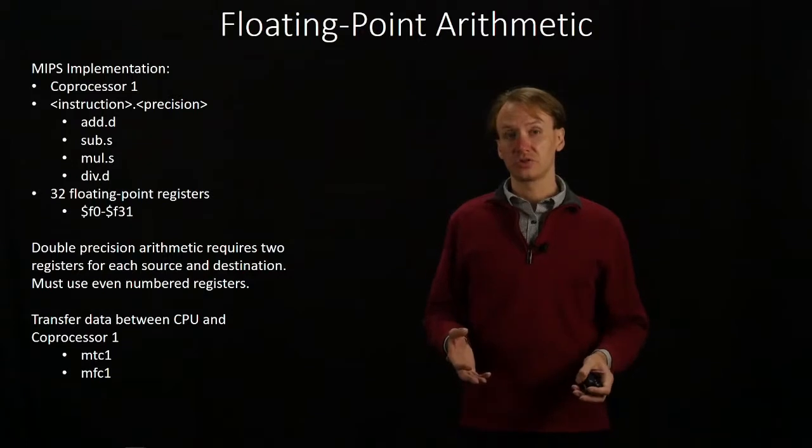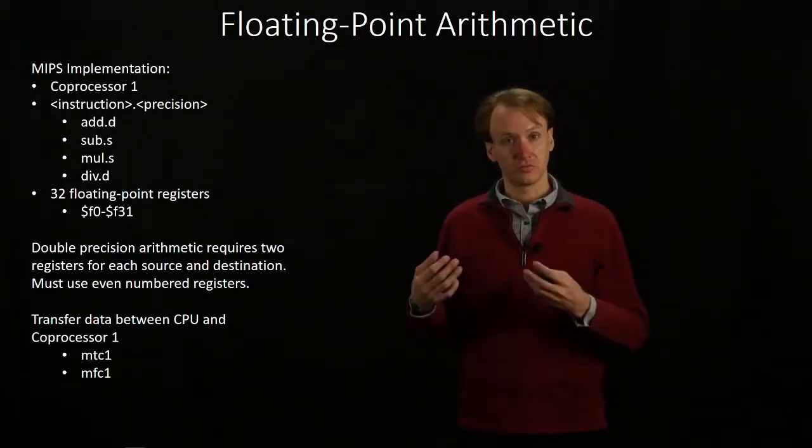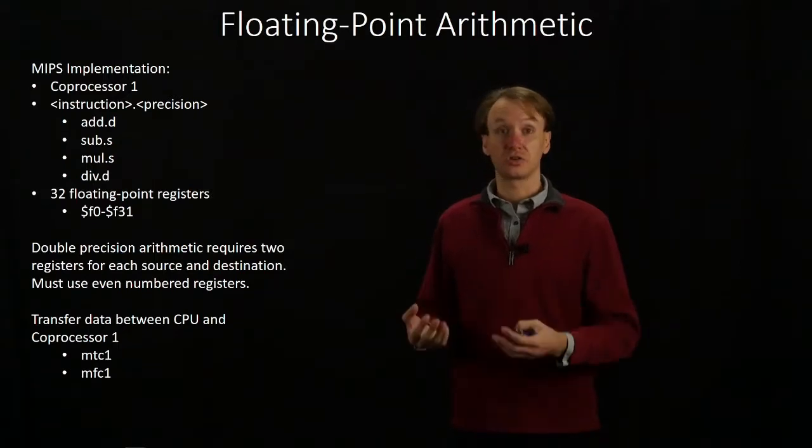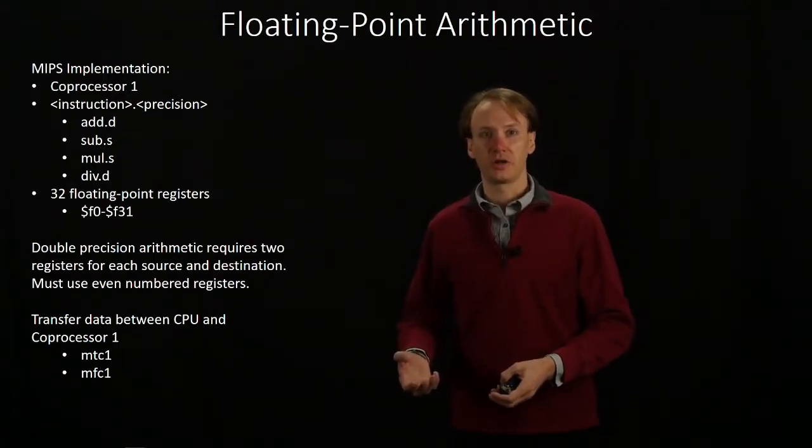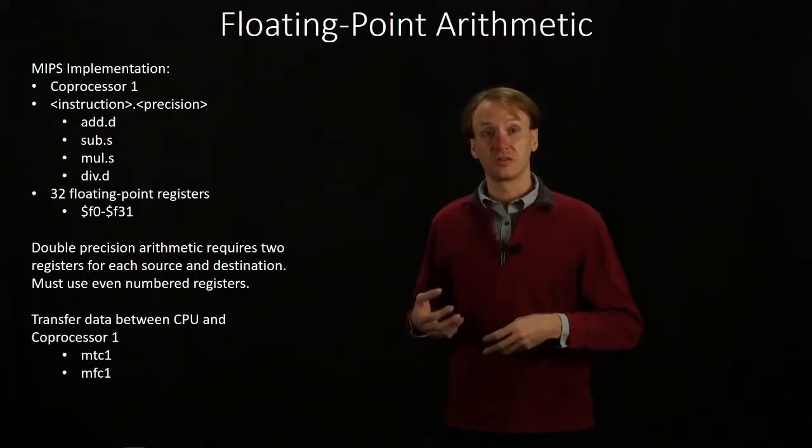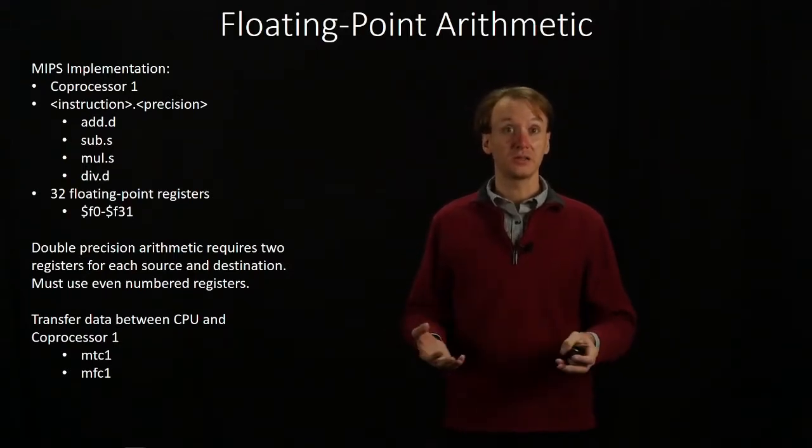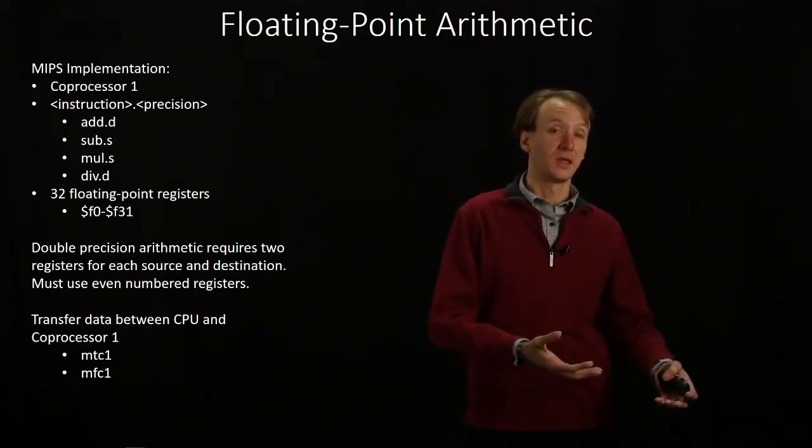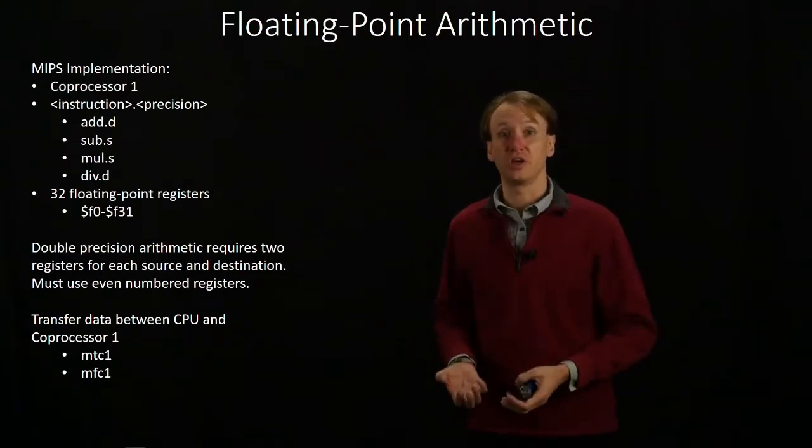So if I have an add double instruction that wants to store to, say, register F0, it's going to store to register F0 and register F1. If I told it that the first source would be register F8, it would pull in the data from F8 and F9. That way it gets a full 64 bits to use in its computation.